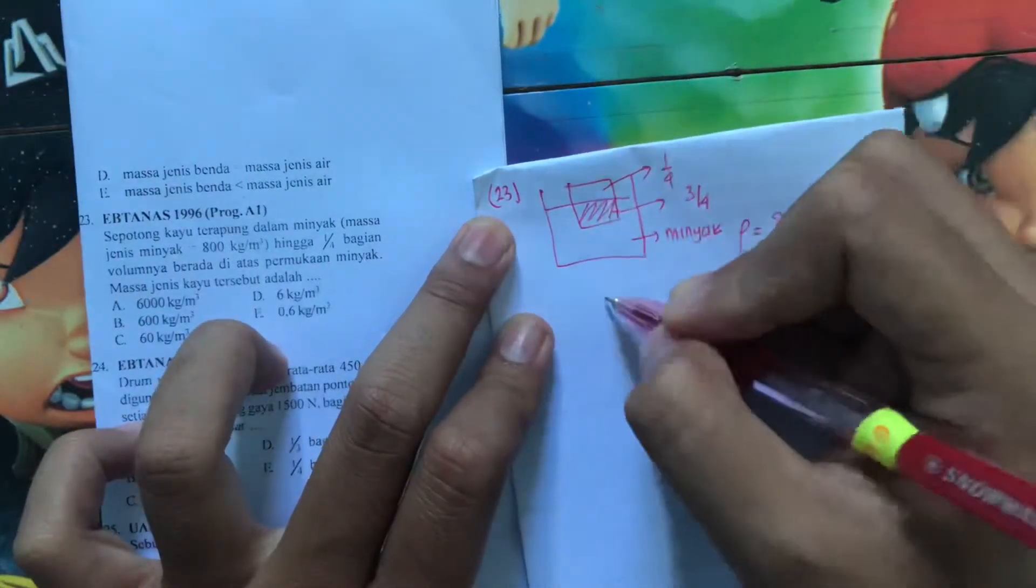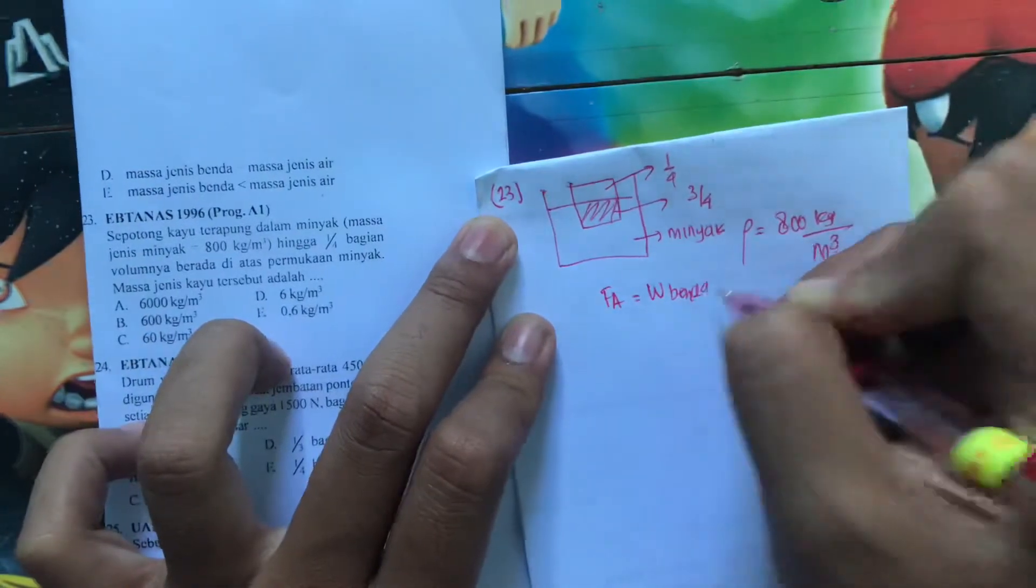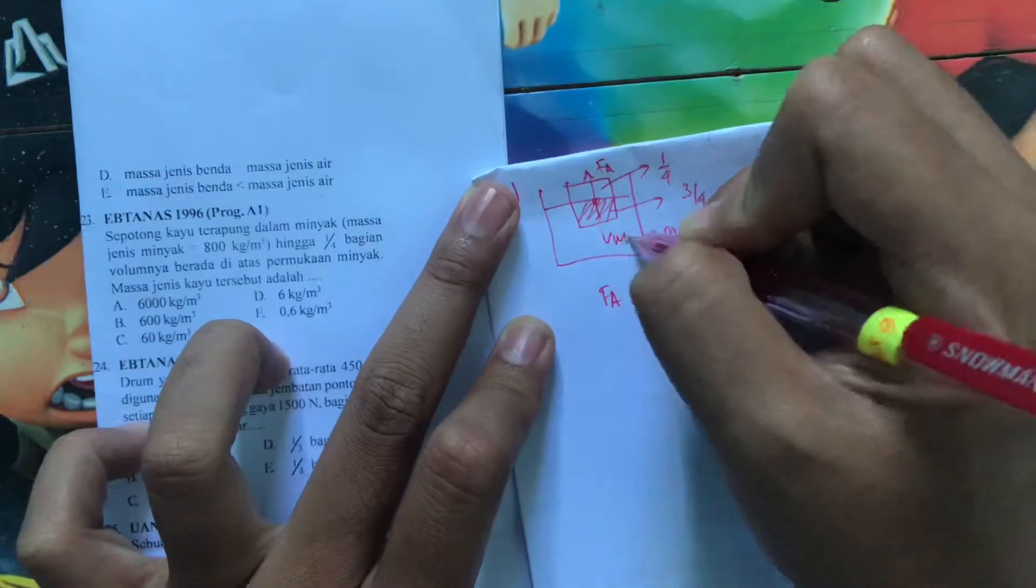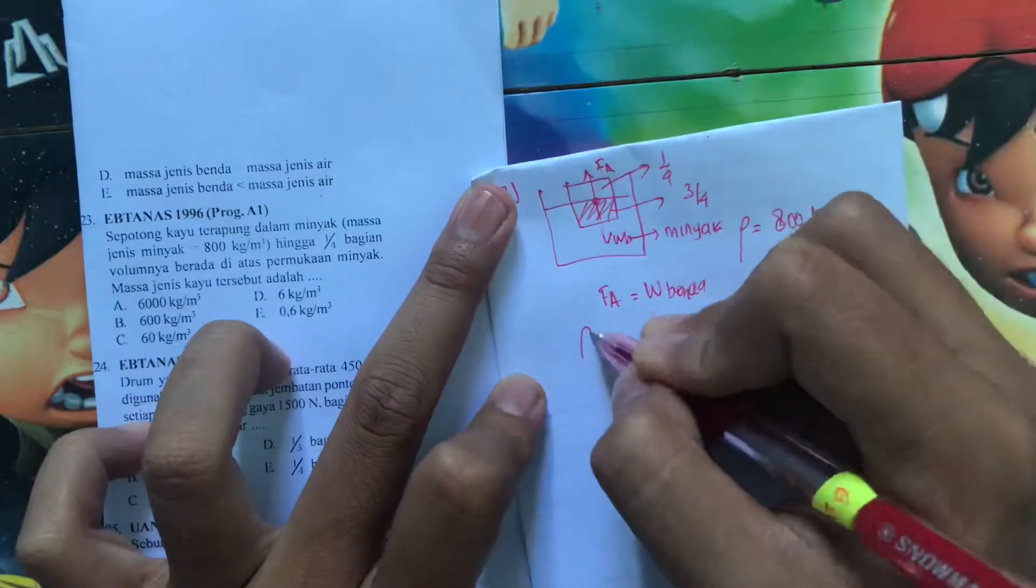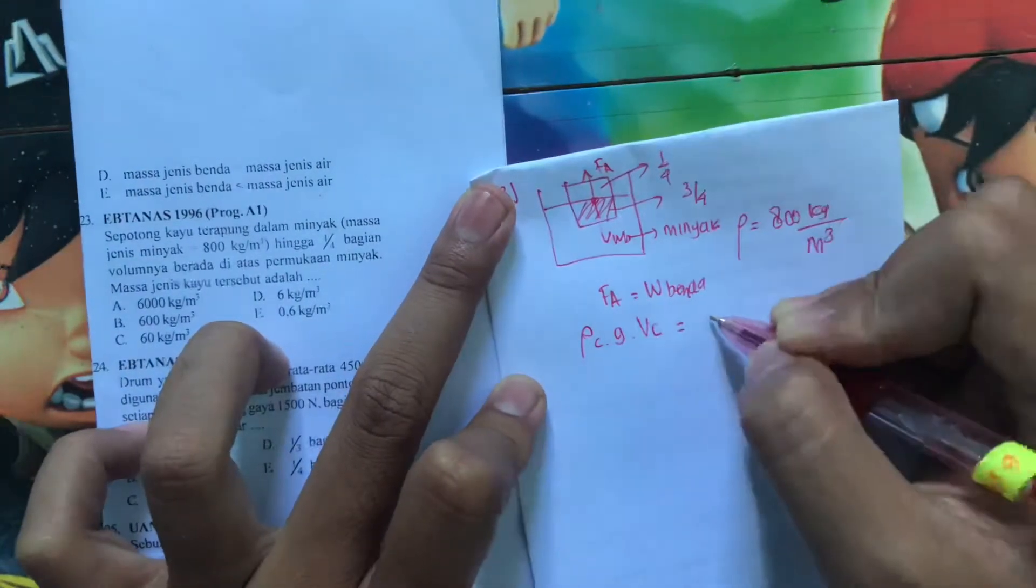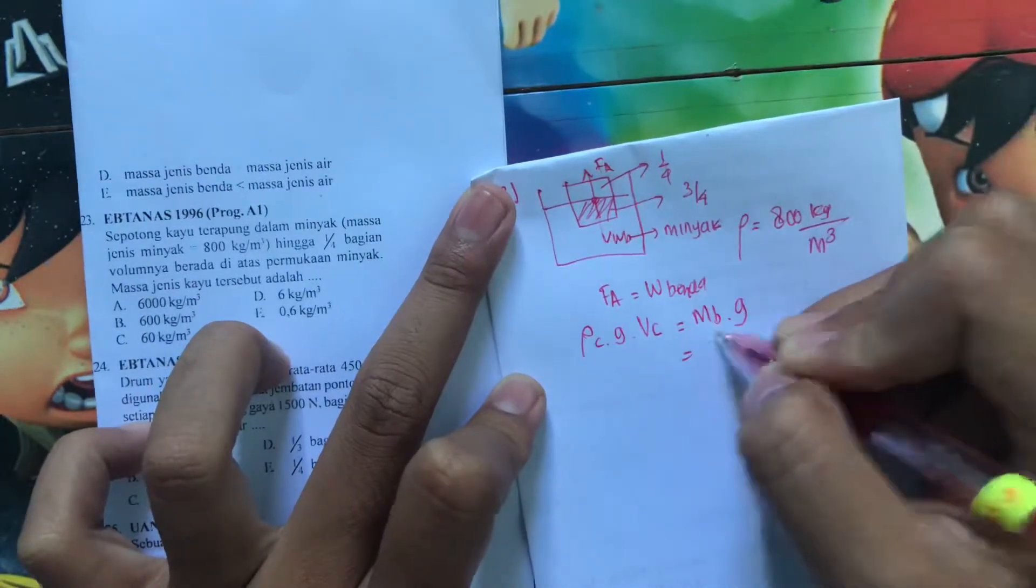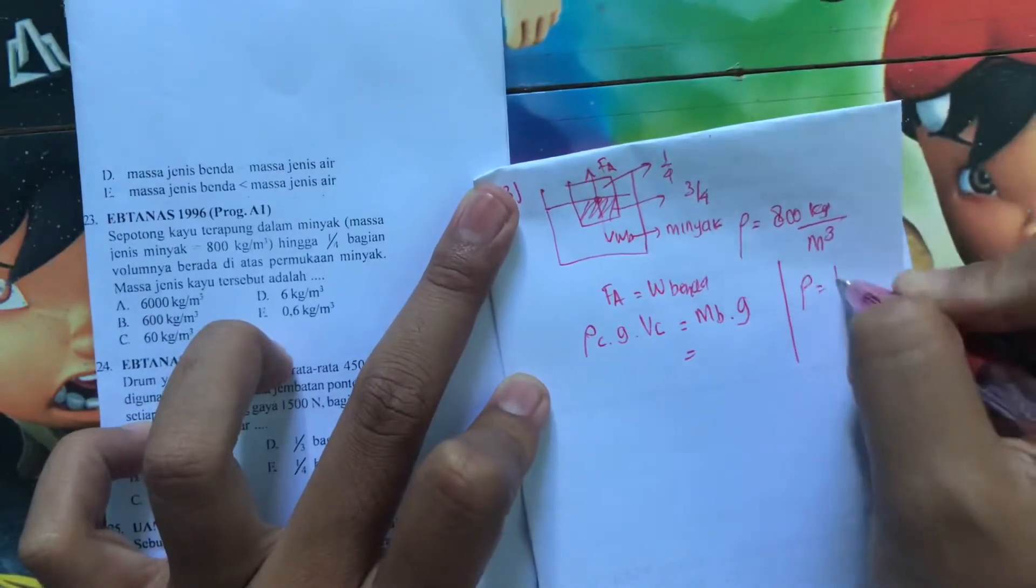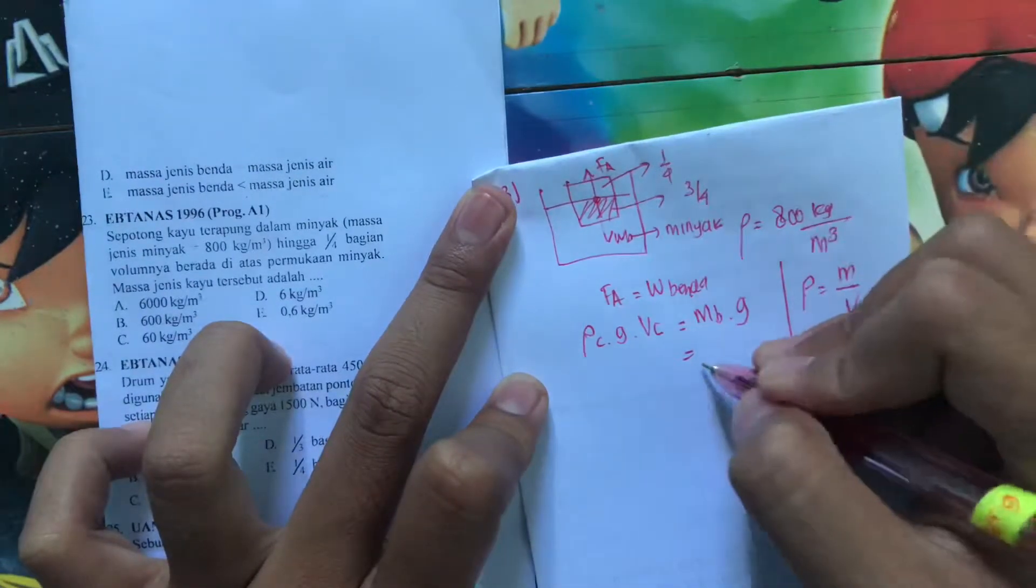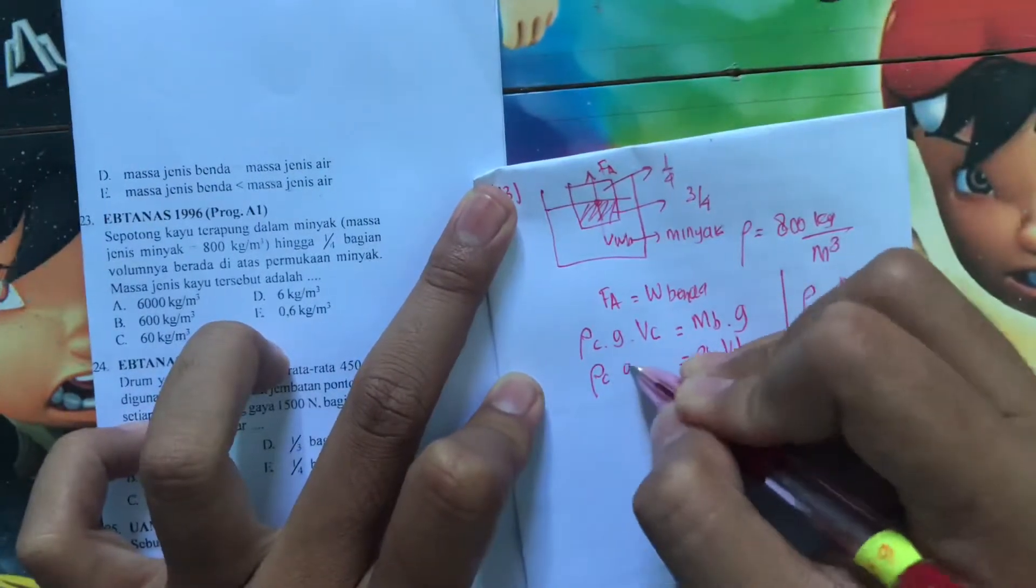Berarti gaya-gayanya apa? FA itu sama dengan B benda. FA-nya kan ke atas. B bendanya ke bawah. FA itu rho cairan kali G kali volume tercelup. Kalau B benda berarti adalah masa benda kalikan gravitasi. Tapi masa boleh kita cari nih dari persamaan ini. Rho sama dengan M per V. Berarti M itu adalah rho kali V.